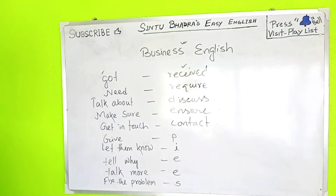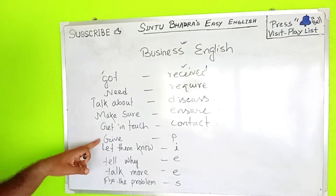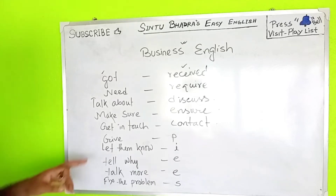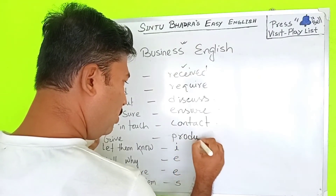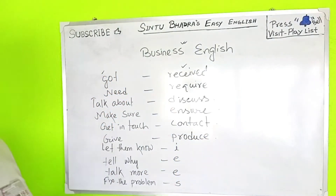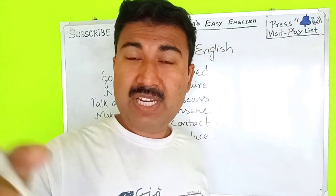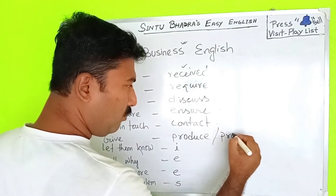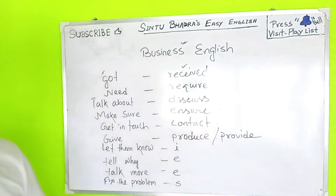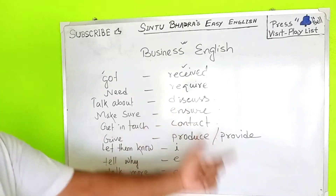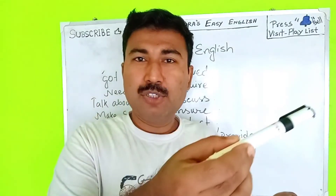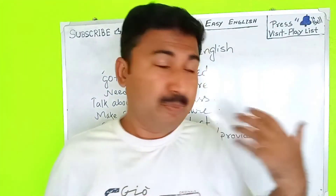Next: 'give' — instead of saying 'give,' in business English you say 'provide' or 'produce.' The formal word is 'provide' (P-R-O-V-I-D-E). So instead of 'give facilities,' you say 'provide facilities.' 'Giving' is casual, while 'providing' is the better, more formal sense used in business.